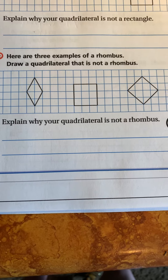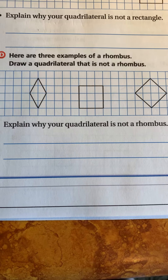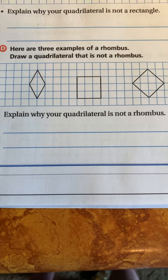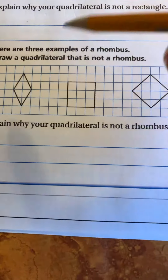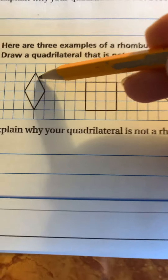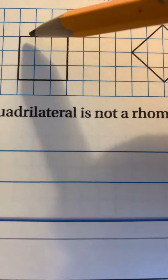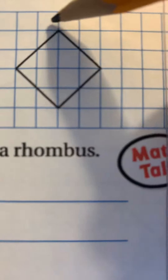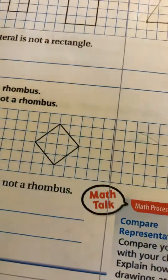Here are three examples of a rhombus. We need to draw a quadrilateral that is not a rhombus. Remember, a rhombus has four sides of equal length — each one of the sides on each of these shapes is the same length.